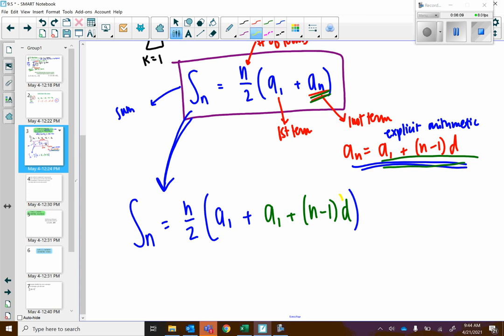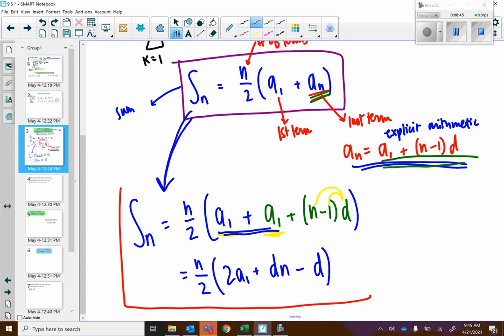If I do a little bit of algebra here, I distribute my d, I add together these common terms. We're going to do a little bit of simplification. We have n divided by 2 times the quantity. We have two copies of a1 plus d times n minus d. Or you could just write it as n minus 1 times d. It really doesn't matter all that much. I think maybe the more important thing is really just noting that you can add these two terms together. It kind of doesn't matter which you want to use. It really just depends on what you have, what you are given to begin the problem.